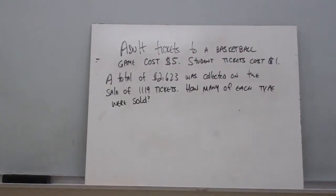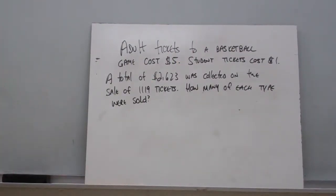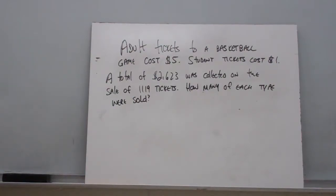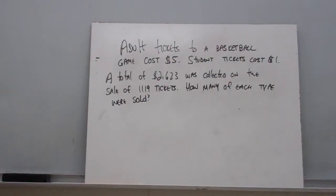Take a look at the problem we got on the board here. Adult tickets to a basketball game cost $5, student tickets cost $1. A total of $2,623 was collected on the sale of 1,119 tickets. How many of each type of ticket were sold?